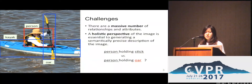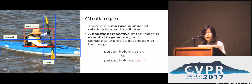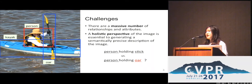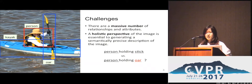Some of the challenges include the massive number of relationships, which makes it difficult to find a dataset that has enough training examples. Moreover, a holistic perspective of the image is essential to generating a semantically precise description. For example, we humans can tell that the person is holding an oar by looking at the kayak and the surrounding water.